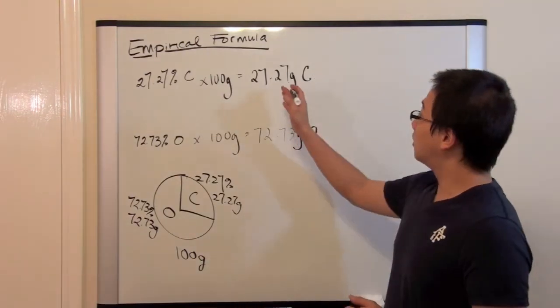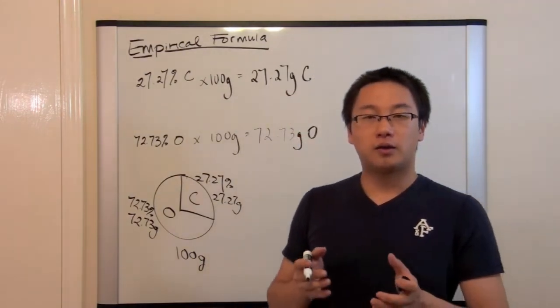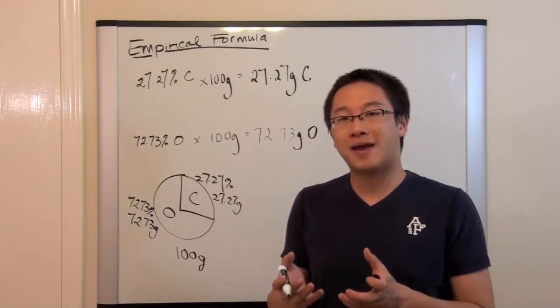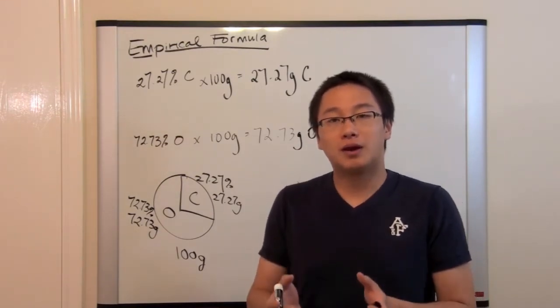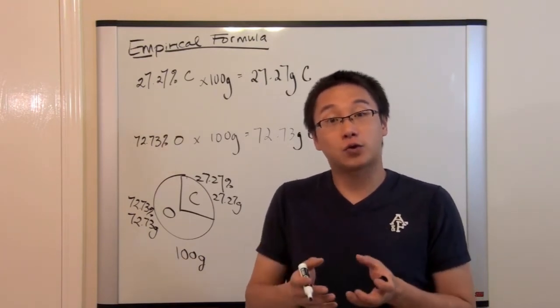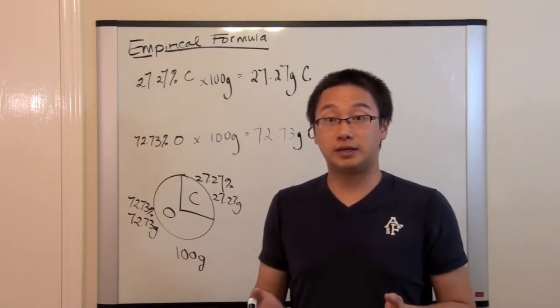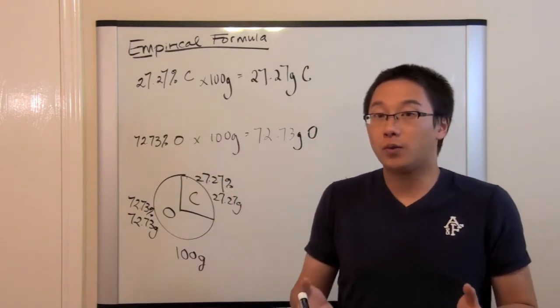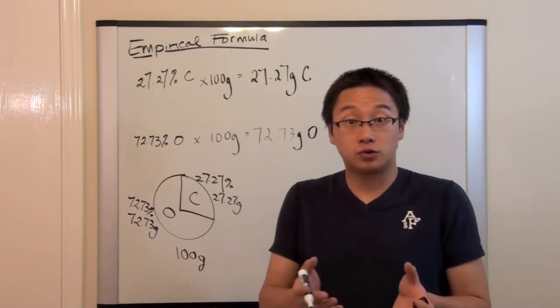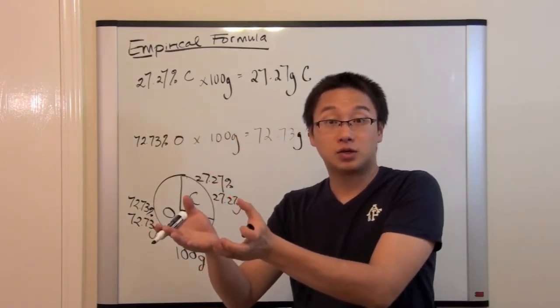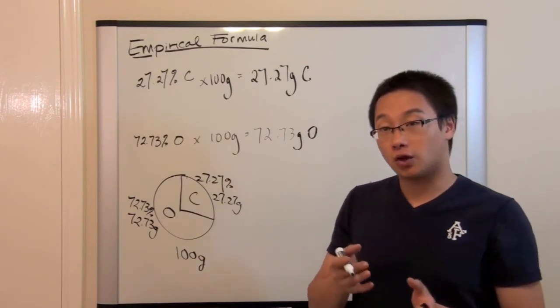Next, we have grams. And going back to what I said at the very beginning is that we would like to compare the quantity. We would like to see the ratio between these two elements. That means we have to convert it to some kind of quantity. So the easiest way to do this from grams is that we can use the molar mass to change the number here from mass to quantity. So let's do this.